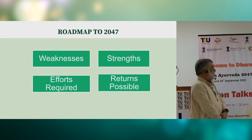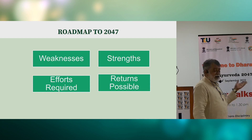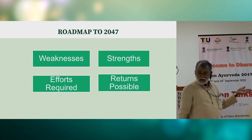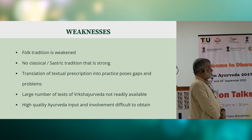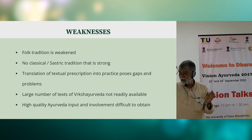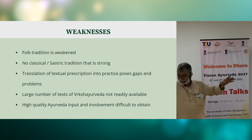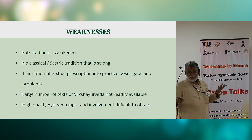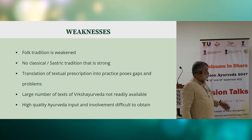In the last few minutes, let's address the roadmap to 2047: what are the weaknesses of this parampara and its strengths, what efforts are required and what returns are possible? The folk tradition is weakened. There is no classically strong sastric tradition remaining. People say they don't even have high quality Ayurvedic inputs to treat patients, let alone for plants and trees. People are fascinated, but are they willing to invest years in research? Translation of textual prescription and practice poses gaps and problems. Large numbers of Vrikshayurveda texts are not readily available, and high quality Ayurveda input involvement is difficult.